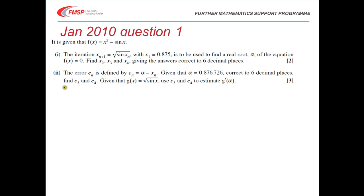Let's start by looking at part 1. In part 1, we're using x_{n+1} equals the square root of sin x_n. We're told that x_1 is equal to 0.875. So all we have to do is substitute that in to find x_2.